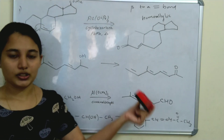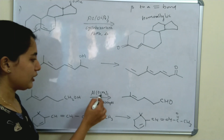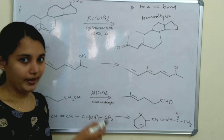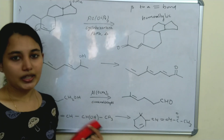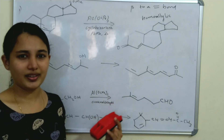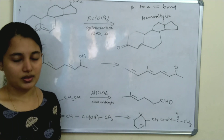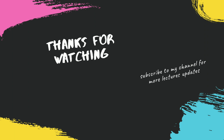So this is Oppenauer oxidation. Secondary alcohol is converted to a ketone in presence of aluminium alkoxide. Aluminium alkoxide is the catalyst, along with a ketone such as acetone. A carbonyl compound is formed. This is Oppenauer oxidation.